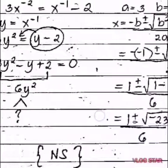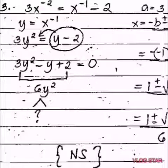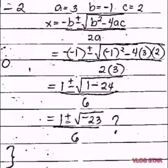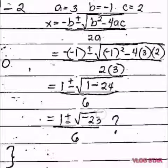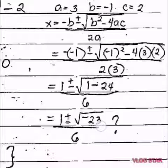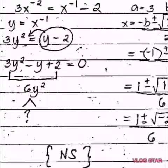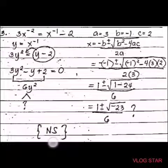Since factoring fails, use the quadratic formula. Identify a equals 3, b equals negative 1, c equals positive 2. The formula gives y equals negative b plus or minus square root of b squared minus 4ac, all over 2a. Substituting: y equals 1 plus or minus square root of 1 minus 24, all over 6. One minus 24 is negative 23, so y equals 1 plus or minus square root of negative 23, all over 6. Since there is a negative number inside the radical sign, it becomes an irrational number — therefore we cannot get a factor, and the solution is no solution.